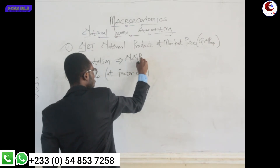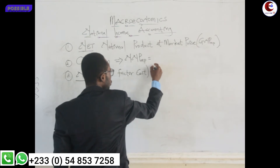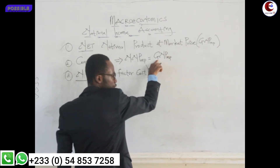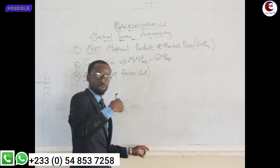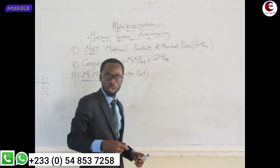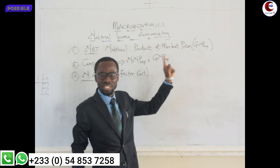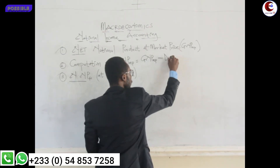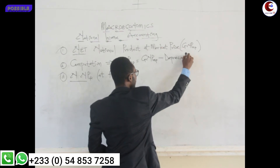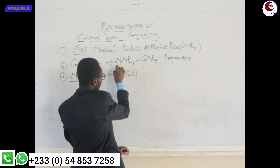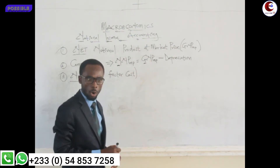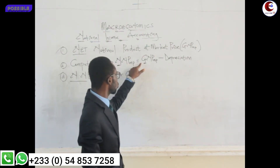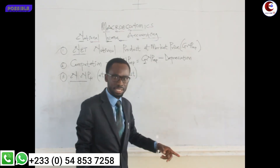Net national product at market price is equal to GNP at market price — gross — and whenever you subtract depreciation from gross, you get net. So: net national product at market price is equal to gross national product at market price minus depreciation.